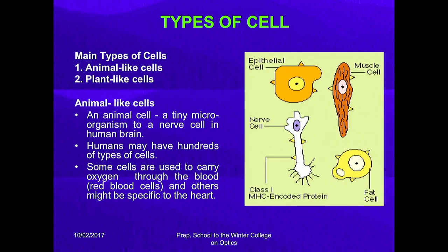There are two main types of cells we encounter in life. One is called the animal-like cell, the other is called the plant-like cell. Animal cells can be a skin cell, a muscle cell, a fat cell, or a nerve cell — from a tiny microorganism to a nerve cell in a human brain. Humans may have hundreds of different types of cells. Some cells carry oxygen through the blood — these are called red blood cells — and others are specific to the heart or brain.